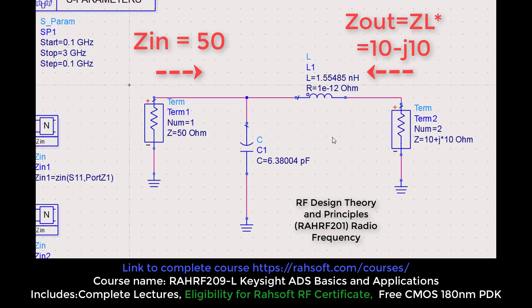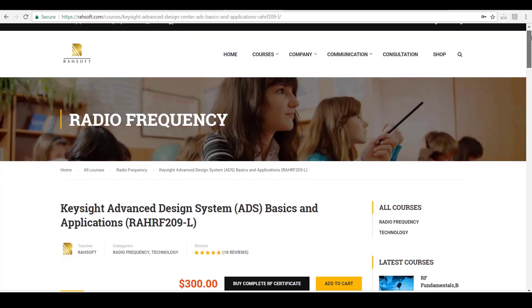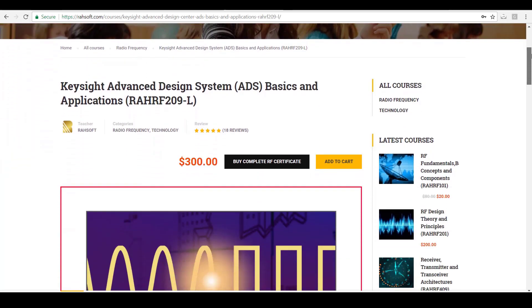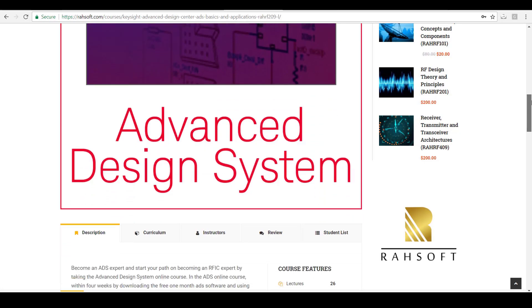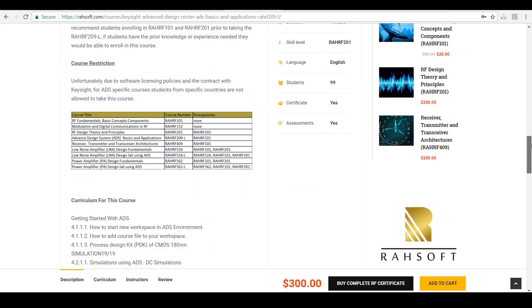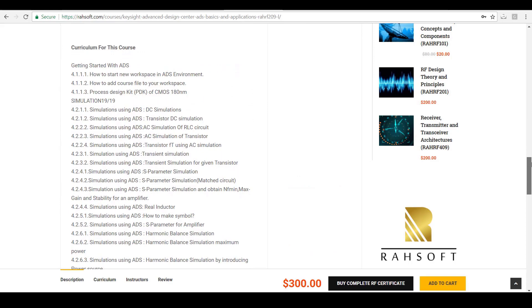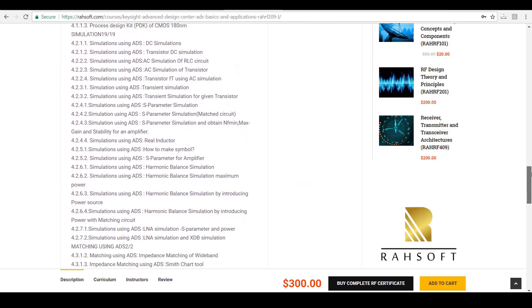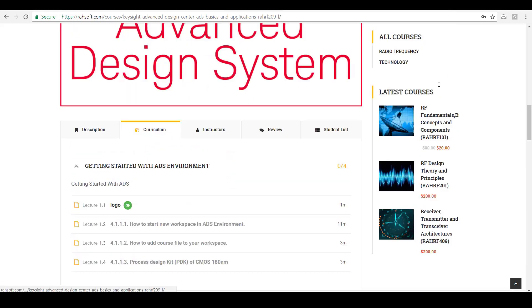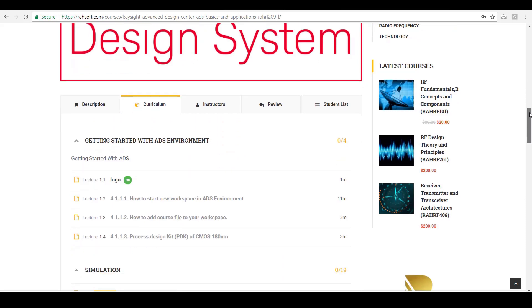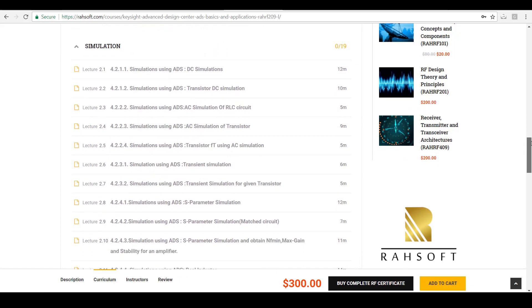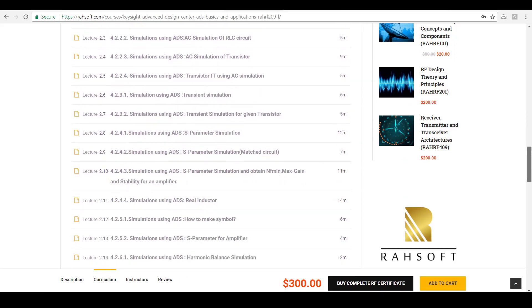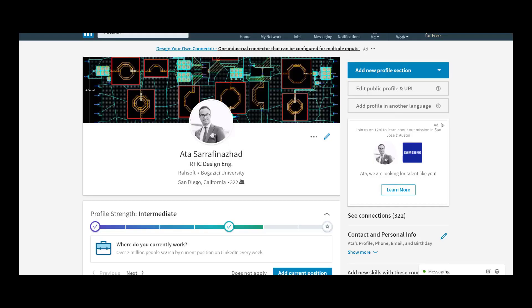Welcome to RAHRF209L Keysight Advanced Design System ADS Basics and Applications course, where you will learn how to do simulations on RF circuits in order to become an experienced radio frequency design engineer and land a job in companies like Apple, SpaceX, Qualcomm, and Broadcom, designing ICs going inside phones and laptops or systems going into satellites and planes.